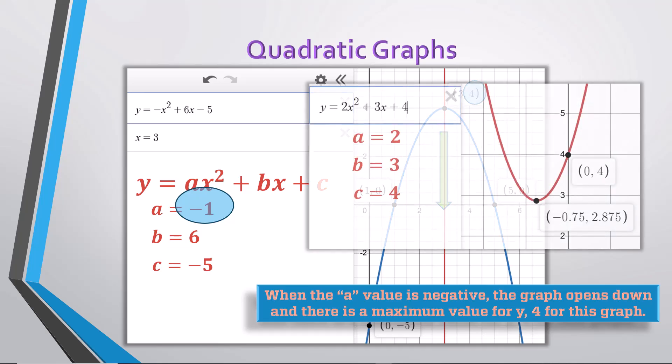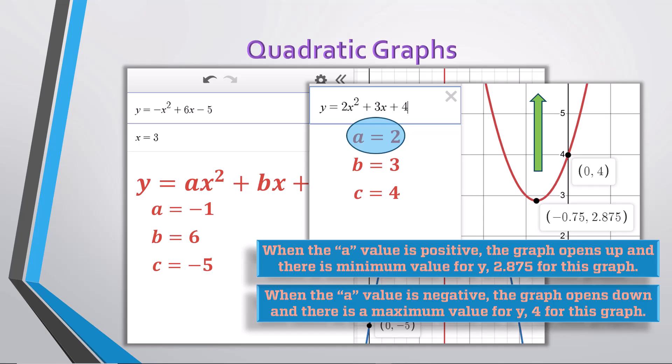In this graph we looked at earlier, the graph is opening up, and you can see the a-value is positive, confirming that when the a-value in the equation is positive, the graph opens up, and there is a minimum value for the graph, again, the y-value of the vertex, 2.875 in this case.